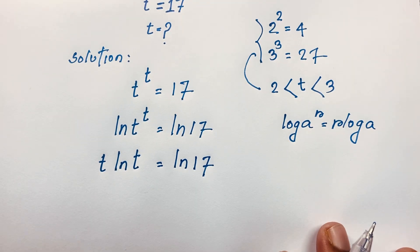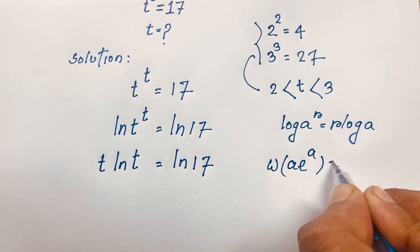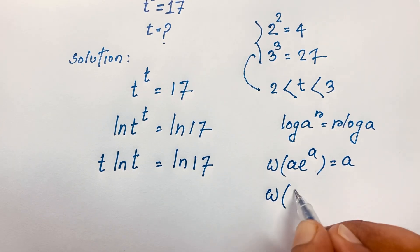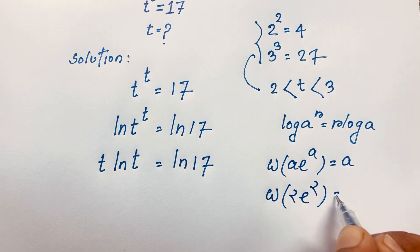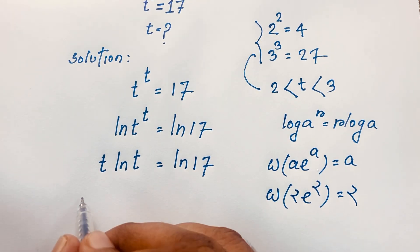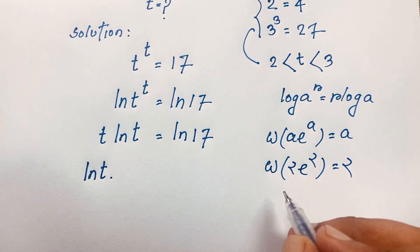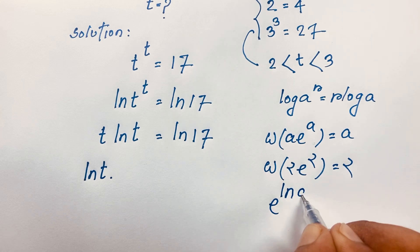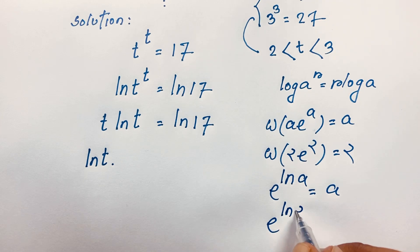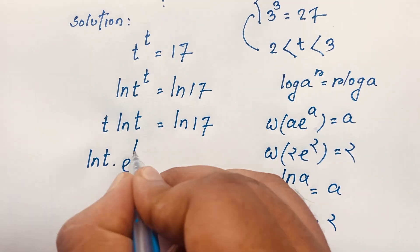Now I want to use the Lambert W function. The Lambert W function states: if a·e^a = x, then W(x) = a. For example, W(2·e^2) = 2. To apply this formula here we need e, so I use the identity e^(ln a) = a — for example, e^(ln 2) = 2. So this t becomes e^(ln t).